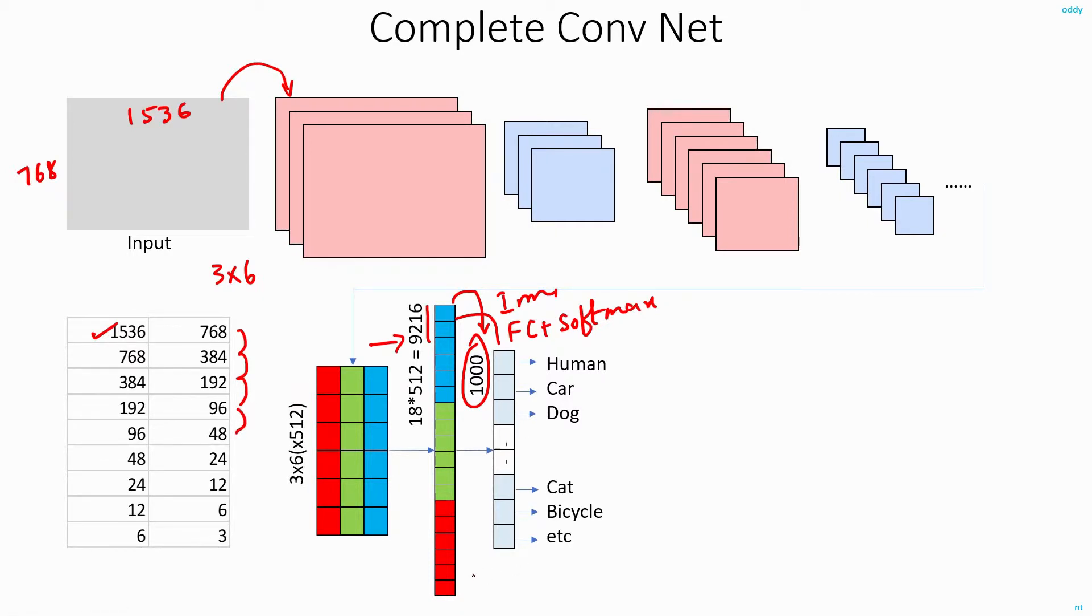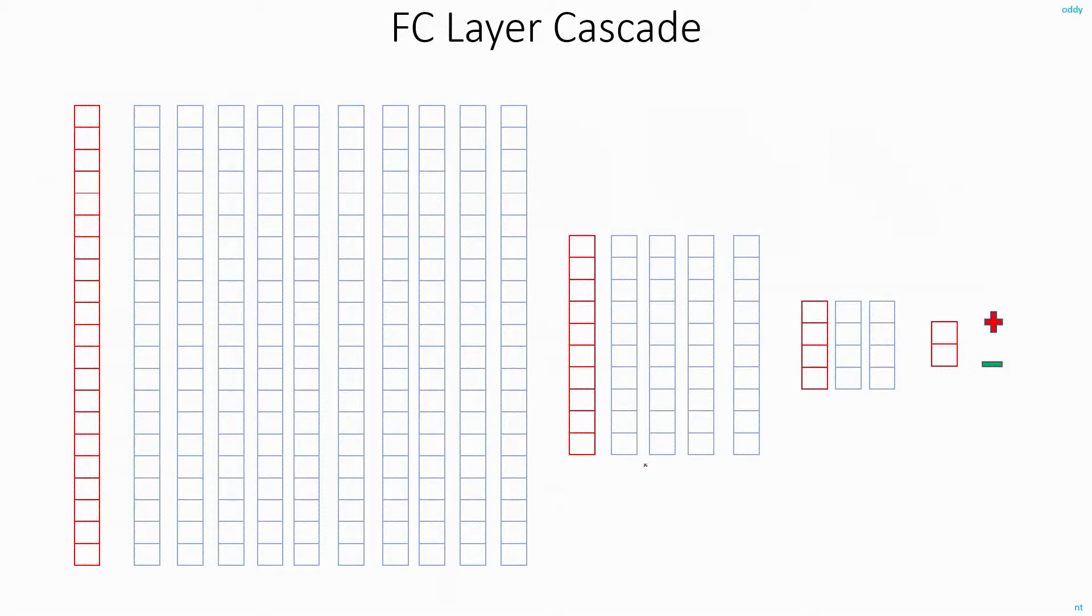Same thing can be done even in the fully connected layers. So for example, if your input array is of length 21, what you can do is you can have 10 different filters in your first stage of the fully connected layer. So the output of your first stage of fully connected layer will be an array of size 10.